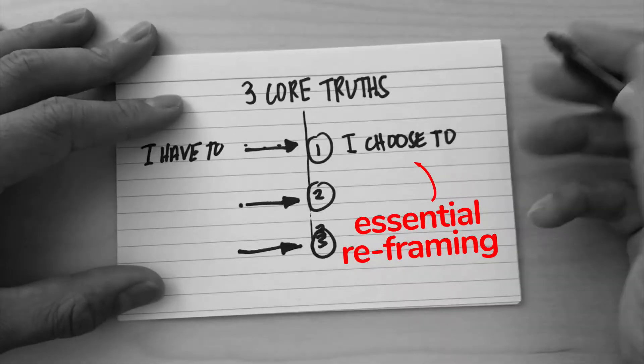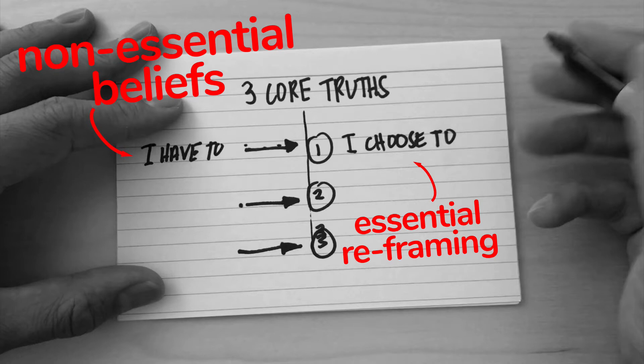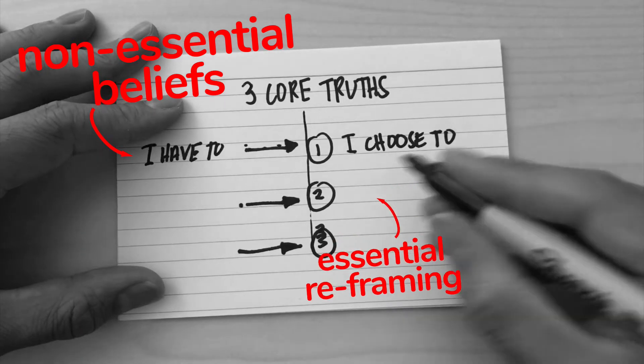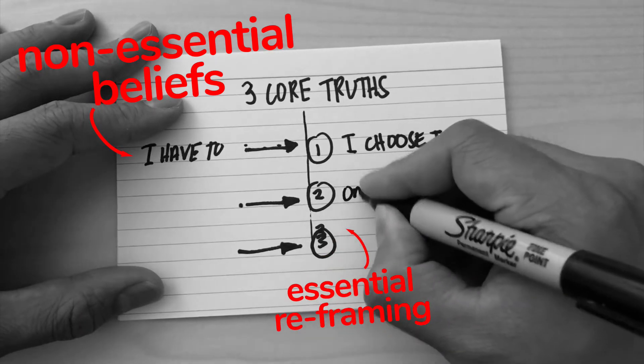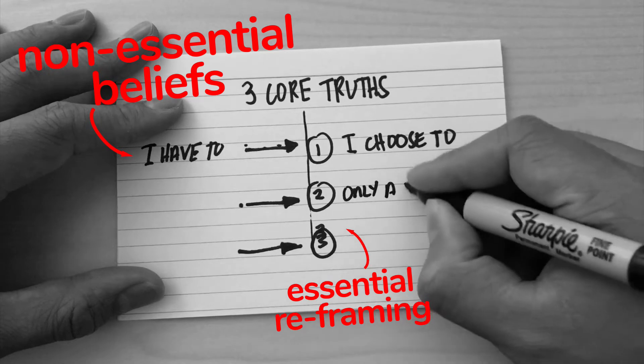The thing about these core truths is that they come from limiting beliefs that we have. 'I choose to' aligns with 'I have to.' A lot of us use that language saying 'I have to do this,' but if you change it to 'I choose to,' then you have more ownership over it and you start to think of the reasons that you choose to do certain things.